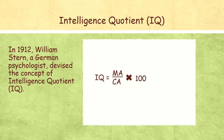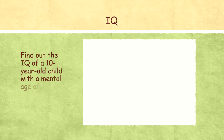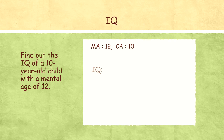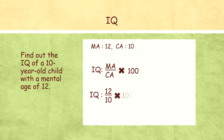Let's see one example of how we calculate IQ. Find the IQ of a 10-year-old child with a mental age of 12. The chronological age CA is 10 and MA is 12. Using the formula, MA divided by CA into 100: 12 divided by 10, multiplied by 100, equals 120. So IQ is 120.